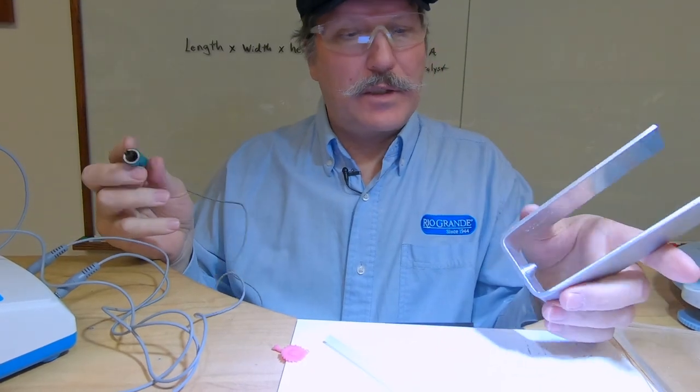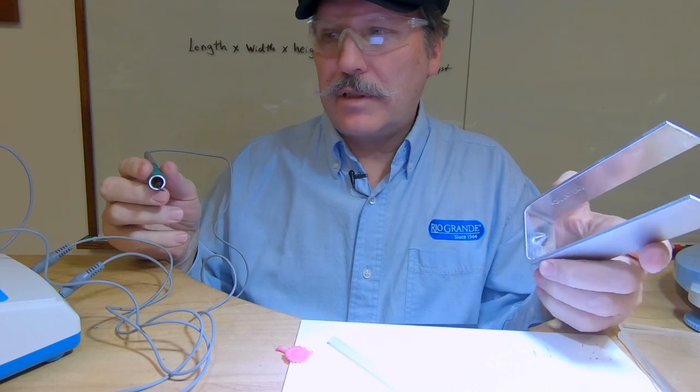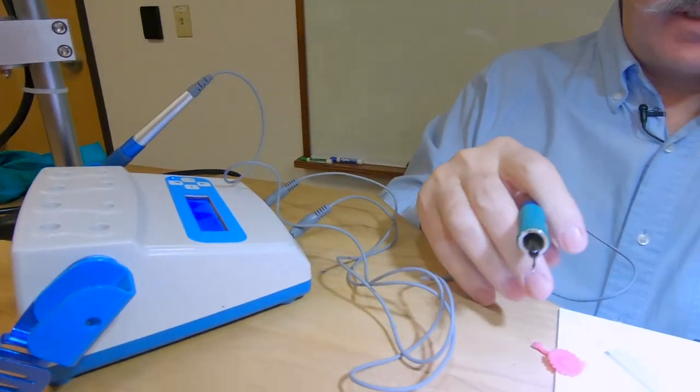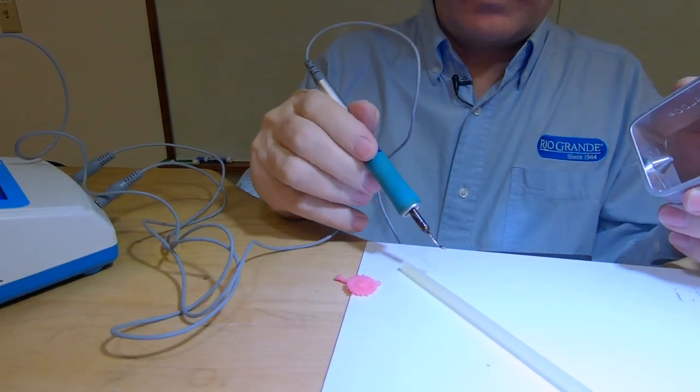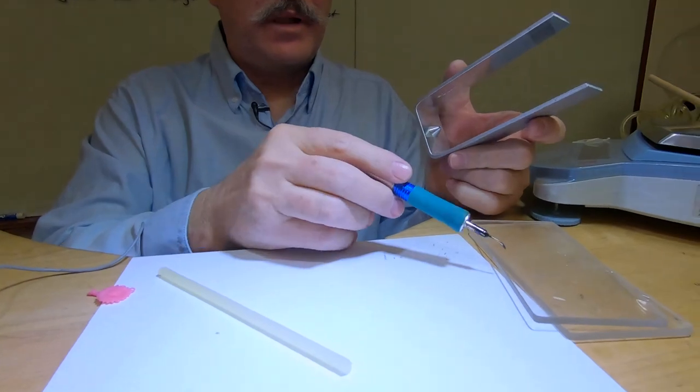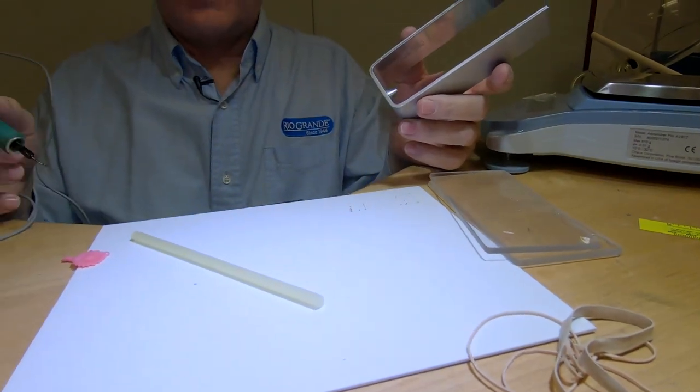Okay, so these are going to be the tools that you will need for your RTV mold. I'm using a wax pen, your model of course, some sticky wax, then you've got the frame, the plates, and rubber bands, and really that's it.